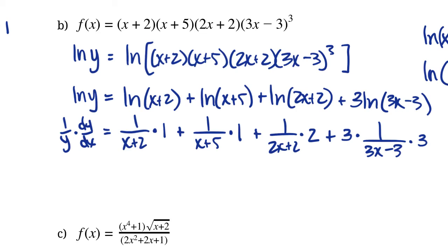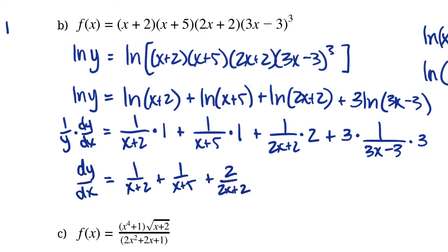Multiplying both sides by y to isolate dy/dx: dy/dx equals 1 over (x plus 2) plus 1 over (x plus 5) plus 2 over (2x plus 2) plus 9 over (3x minus 3), all multiplied by y. We could simplify the fractions, but leaving it here keeps the example manageable. This approach of breaking up the logarithm was a lot simpler than distributing or applying the product rule repeatedly.